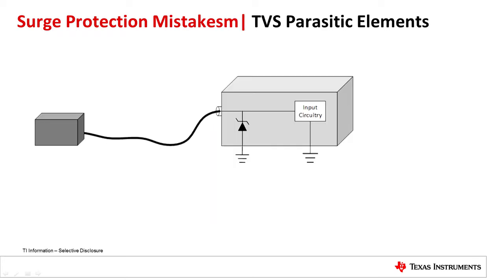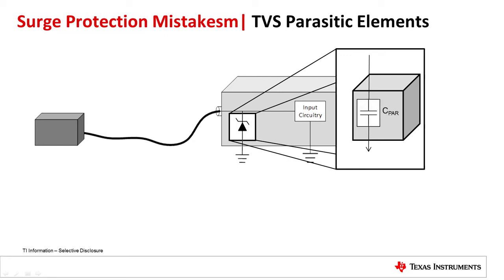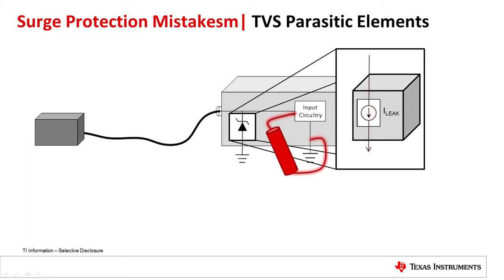The third common mistake is to ignore the TVS diode parasitic elements. Like any circuit element, TVS diodes have leakage currents and capacitances. However, new designers often don't realize how large these parasitics can be. Leakage currents, especially for low voltage TVS's, can sometimes reach as high as a milliamp. Even worse, TVS diodes rarely specify leakage current at high temperatures. In battery powered or power conscious systems, this leakage could be unacceptable.